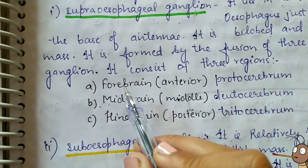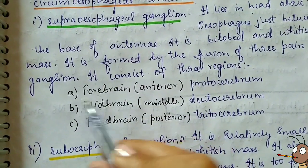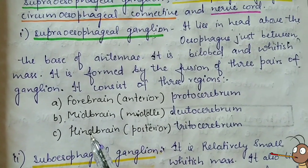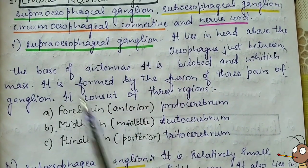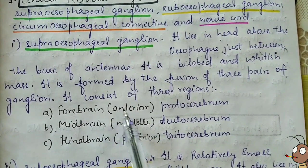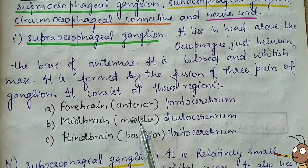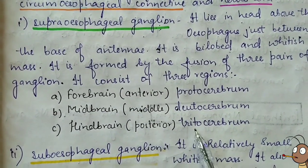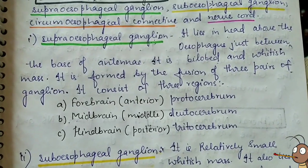The three ganglia that fuse are the forebrain, midbrain, and hindbrain. They fuse together to form the supraesophageal ganglion. The forebrain is anterior in position and is also called the protocerebrum. The midbrain is middle in position and is called the deutocerebrum. The hindbrain is posterior in position and is called the tritocerebrum.